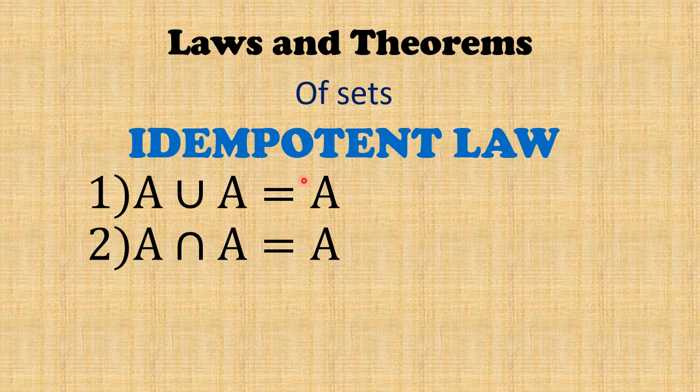The very first important law is the idempotent law. Let us see what is meant by idempotent law. We can say that A union A is equals to A. This is the first law, and the second law is A intersection A is equals to A. Let us see how to prove this.